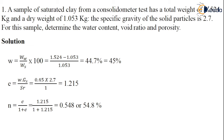Coming to the first type of problem: a sample of saturated clay from a consolidometer test has a total weight of 1.524 kg and a dry weight of 1.053 kg. The specific gravity of solid particles, Gs, is given as 2.7. We need to determine water content, void ratio, and porosity.